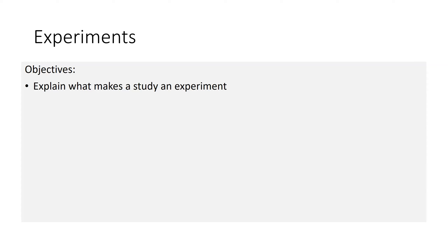Hello everyone. In this video we're going to talk about experimental design. Experiments are a really important type of study, mostly because some researchers want to make a conclusion that infers some type of causation between two variables — it might sound like 'X causes changes in Y.' In this section we'll describe what elements are in an experiment and what actually makes a study an experiment.